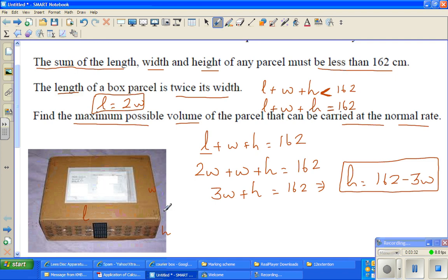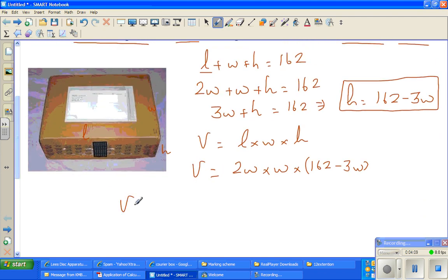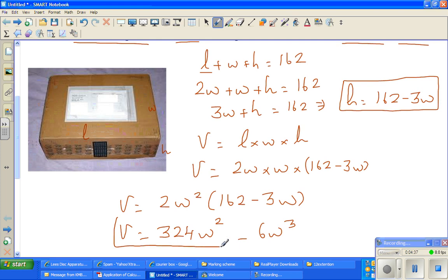The volume is length times width times height. V equals L times W times H. Therefore, V is equal to 2W times W times (162 minus 3W). This is equal to 2W squared times (162 minus 3W). If we expand this, this is 324W squared minus 6W cubed. This is volume as a function of width. I have expressed V, the volume, with respect to W.